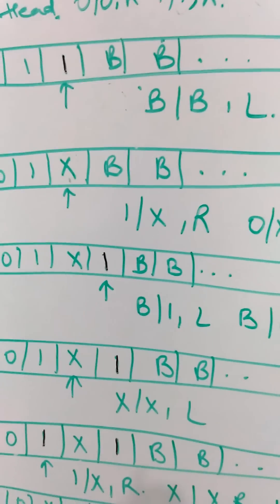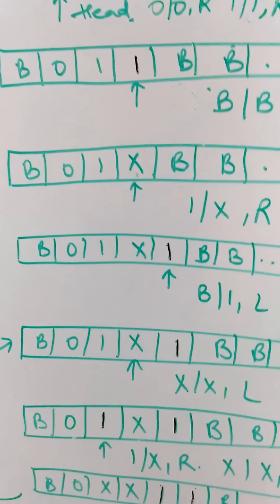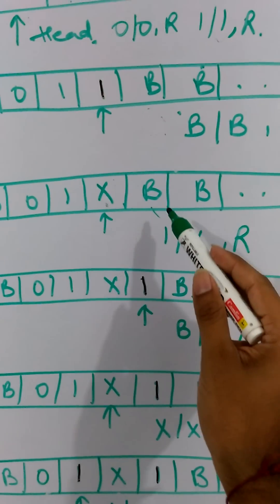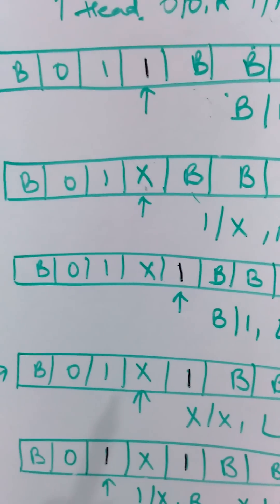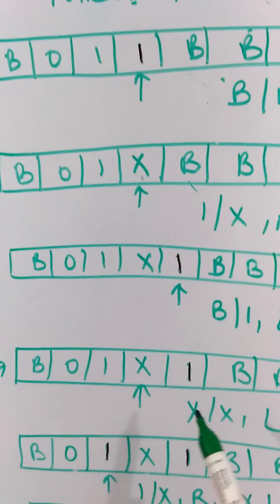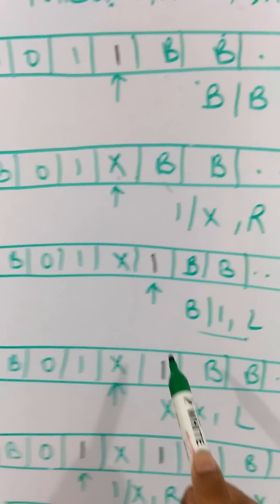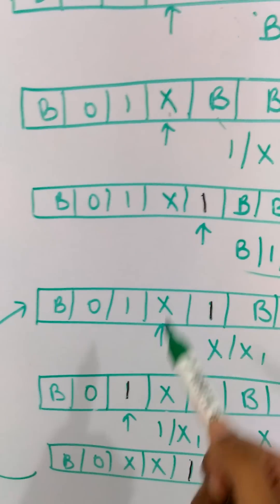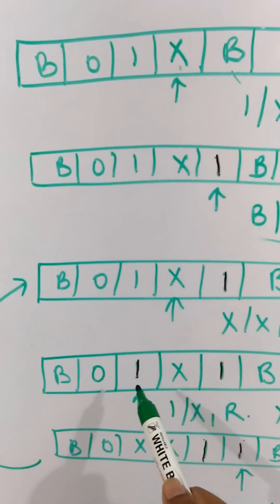Similarly, if the input had been 0 then it would have replaced it with x. So whatever the input is, we have to replace it with x and then move to the right position. After moving to the right position we have this blank space. We have to replace this blank space with the current character which we have taken — which was 1 in this case.